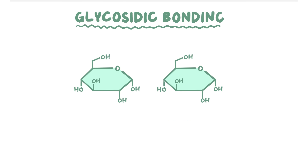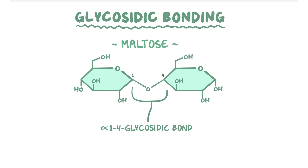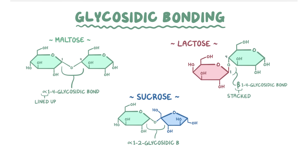Monosaccharides link together through glycosidic bonding, which is when an OH group from the carbon on one monosaccharide binds with the hydrogen from the carbon of another monosaccharide. Together this forms an H2O, or a water molecule, which goes away. In the case of maltose, that leaves an alpha-1,4 glycosidic bond — a bond between carbon number 1 of one glucose monosaccharide and carbon number 4 of the other — and alpha refers to the fact that the molecules are lined up next to each other. Lactose has a beta-1,4 glycosidic bond, meaning carbon 1 of galactose and carbon 4 of glucose are bonded, but the molecules are stacked with one higher than the other. Finally, sucrose has an alpha-1,2 glycosidic bond, meaning that carbon 1 of glucose and carbon 2 of fructose are bonded.